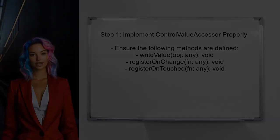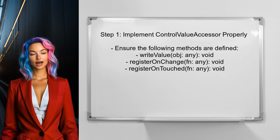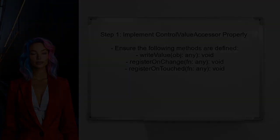To ensure that the form control properties propagate correctly to the wrapped select element, first confirm that the control value accessor interface is implemented properly. This includes defining the write value, register on change, and register on touched methods.